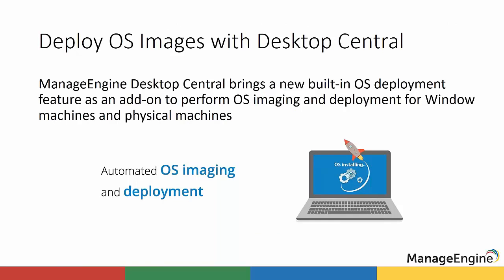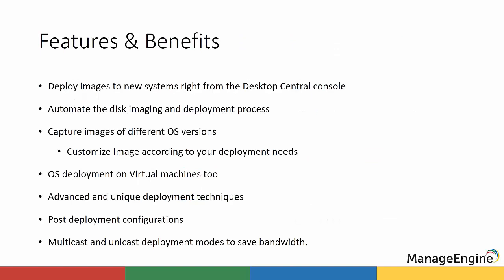The primary task of OS deployment involves capturing the OS image. OS imaging is a process to capture the image of a specific OS from the desired system along with the set of its applications. The captured image will be stored in an image repository, which is a network share from where images will be deployed to client computers. This OS image can be deployed on a new bare metal computer or an existing system with an OS.